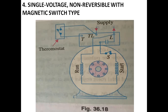One disadvantage of capacitor start motors using magnetic switch lines is that if any slight overload occurs, the plunger may operate. When the plunger operates, it reconnects the starting winding circuit to the supply. Since the starting winding is designed for only very short periods — three seconds or less — it will burn out. This is the single voltage non-reversible magnetic switch type.